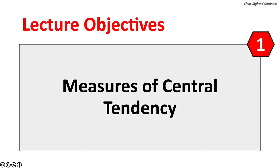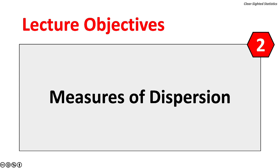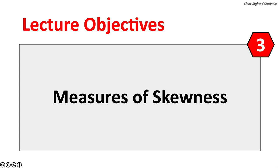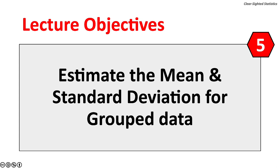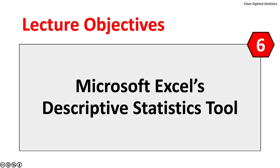This lecture has six objectives. One, we will review the measures of central tendency. Two, we will review the measures of dispersion. Three, we will cover the measures of skewness. Four, measures of relative position will be covered. Five, we will estimate the mean and standard deviation for grouped data. Six, Microsoft Excel's descriptive statistics tool will be covered.